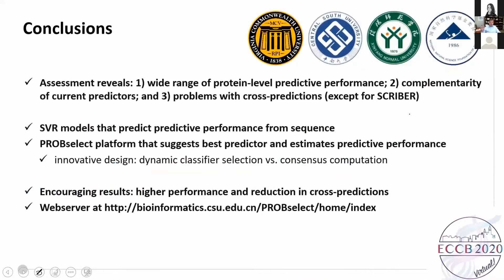To conclude, we showed that current tools offer modest predictive performance that varies between proteins and is strongly affected by cross predictions. We showed it's possible to predict predictive quality directly from the sequence, and these predictions are used to implement PropSelect. This is a novel approach that produces improved predictions based on dynamic classifier selection, which is different from the typically used consensus computation. We show encouraging results and provide a web server for your convenience.